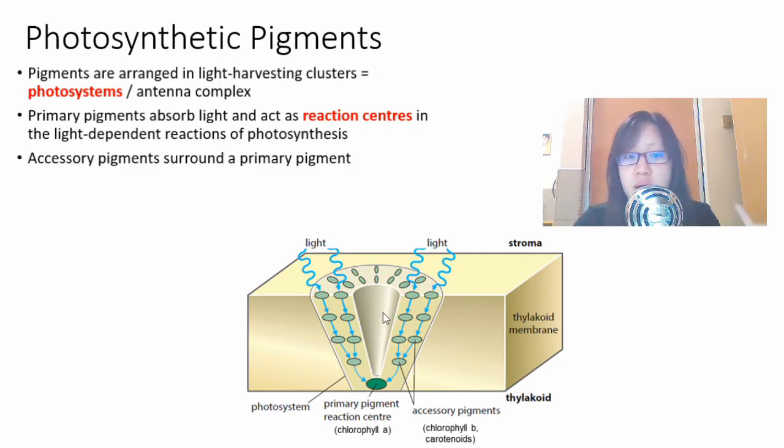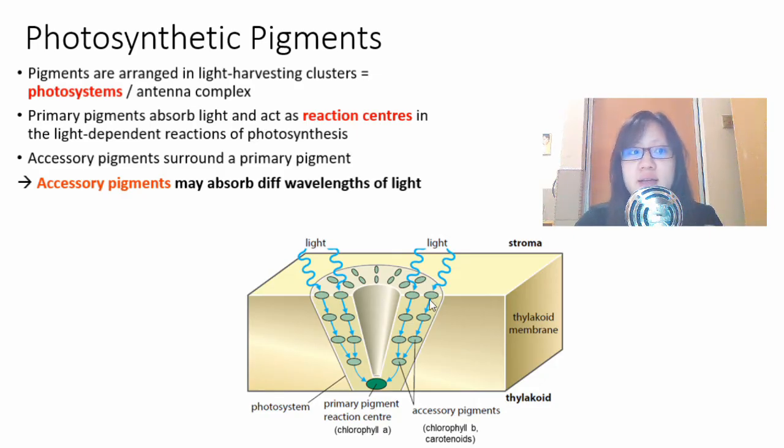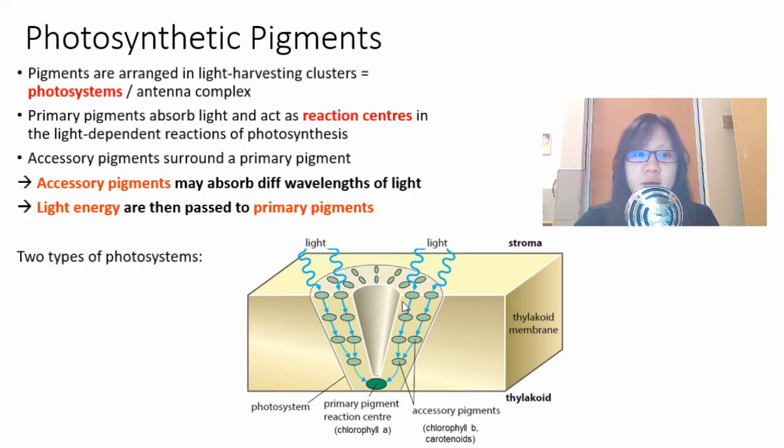It has all these accessory pigments arranged around a primary pigment. The primary pigment's role is to act as reaction centers. It absorbs light mostly and acts as reaction centers in light dependent reactions of photosynthesis. The accessory pigments surrounding it will actually absorb different wavelengths of light that the primary pigment may not absorb and then pass the energy or electrons on to the primary pigment.